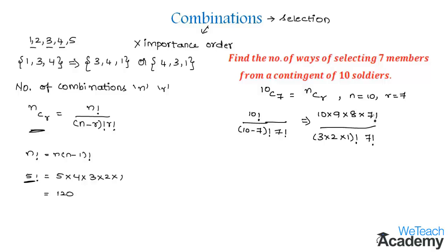We can cancel 7 factorial in the numerator and denominator. By simplifying, we get 10 times 9 times 8 divided by 3 times 2 times 1. Multiplying the numerator gives us 120. Thus we have 120 ways of selecting 7 members from a contingent of 10 soldiers.